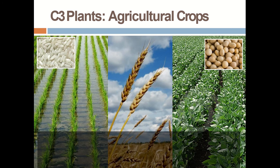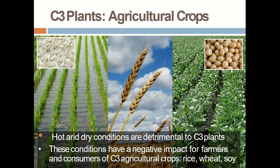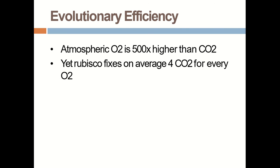Some C3 plants are rice, wheat, and soya. Mostly hot, arid, dry conditions are detrimental to C3 plants. In modern times, when oxygen concentration in the atmosphere is 500 times higher than CO2, yet Rubisco fixes 4 times more carbon dioxide in comparison to oxygen.